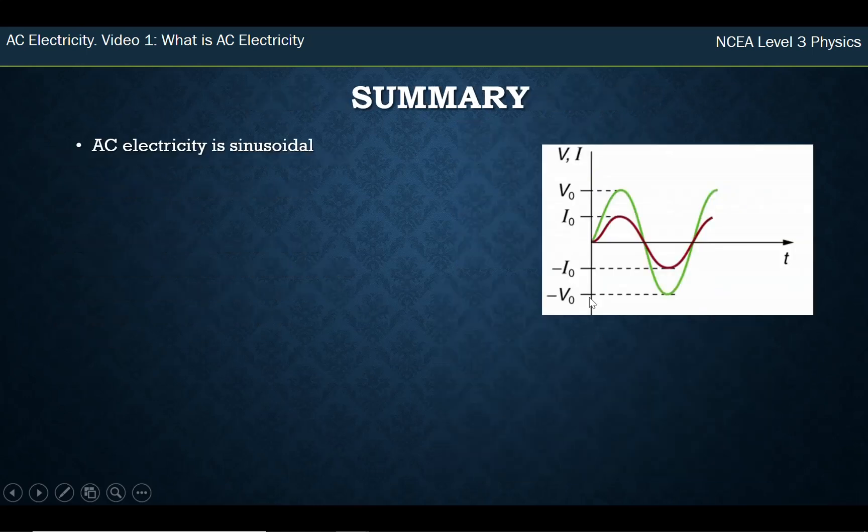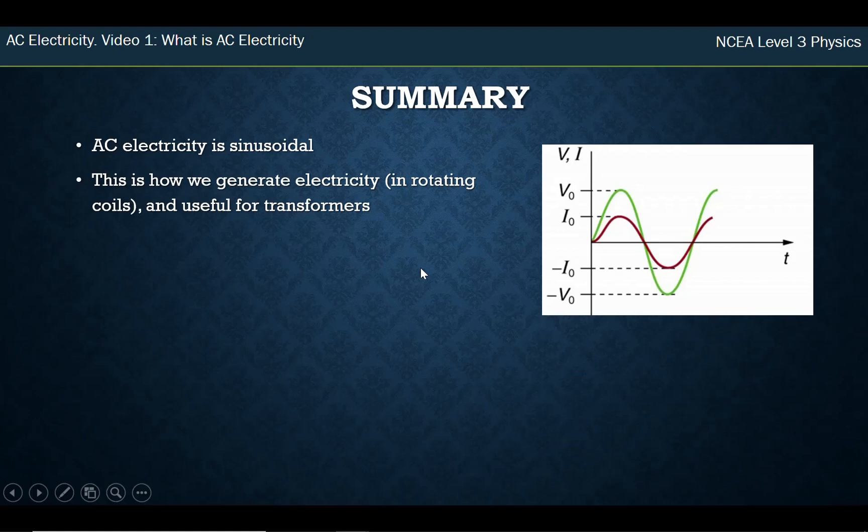So in summary, AC electricity is sinusoidal. It goes back and forth and back and forth. And the reason we have it is because of how we generate electricity in the first place. And it's very useful in these things called transformers, which you're going to learn about in an upcoming video.